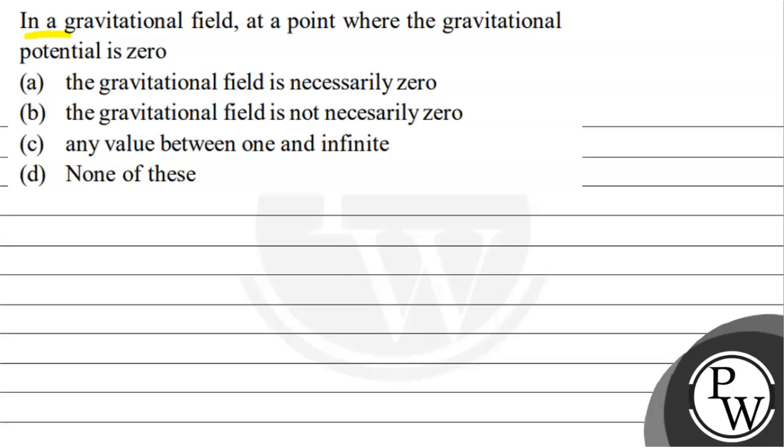Let us read this question. The question says that in a gravitational field at a point where the gravitational potential is 0, the gravitational field is necessarily 0, the gravitational field is not necessarily 0, any value between 1 and infinite, none of these. We have to choose the correct option.